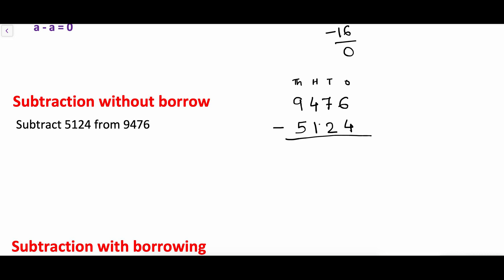Subtraction is always started from the ones place. In the ones place: 6 minus 4 is 2. Tens place: 7 minus 2 is 5. Hundreds place: 4 minus 1 is 3. Thousands place: 9 minus 5 is 4. So the difference of 9476 and 5124 is 4352. In subtraction we start from the ones place and move one by one to the higher place values.